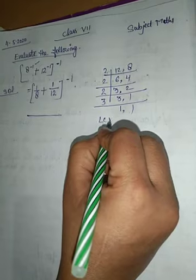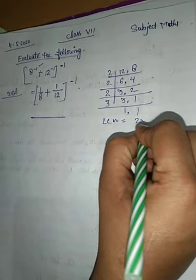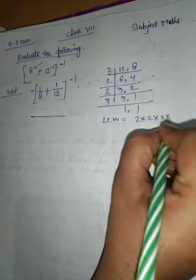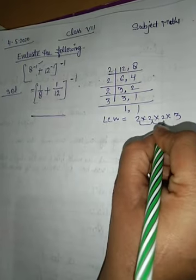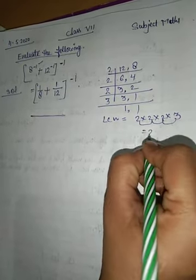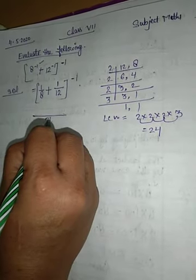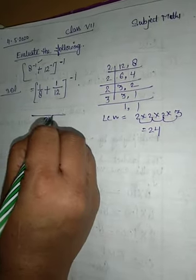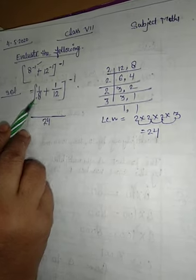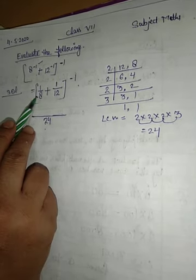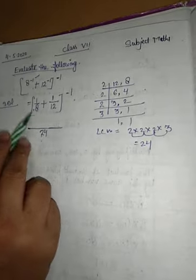The LCM of 12 and 8 is 2 × 2 × 2 × 3. So 2×2 is 4, 4×2 is 8, 8×3 is 24. So 24 is the LCM. Now you will take it in the middle: 24. Now take the denominator and the LCM. Read the table of the denominator up to the LCM.